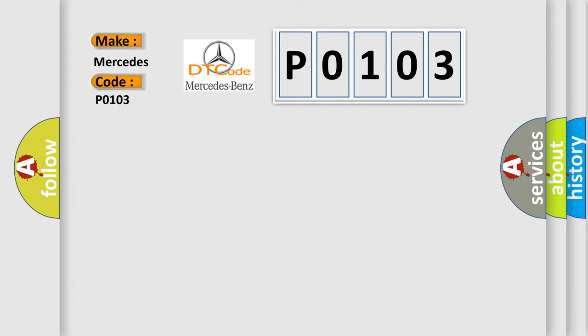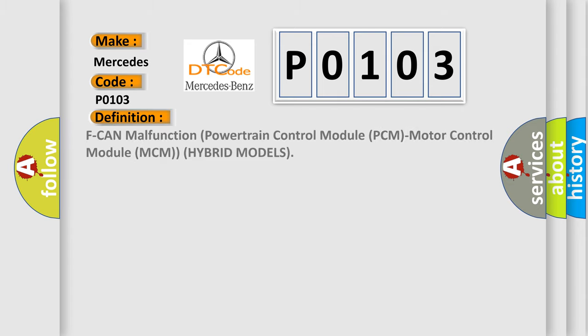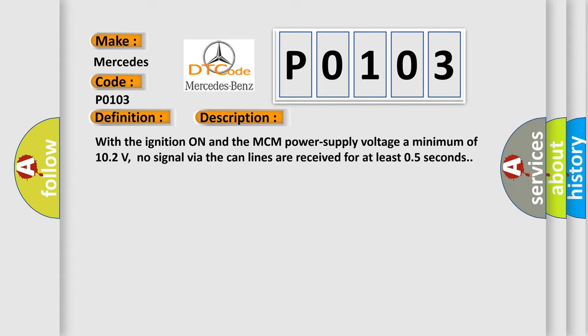The basic definition is: PCM malfunction — Powertrain Control Module (PCM) or Motor Control Module (MCM) for hybrid models. With the ignition on and the MCM power supply voltage at a minimum of 10.2 volts, no signal via the CAN lines is received for at least 0.5 seconds.